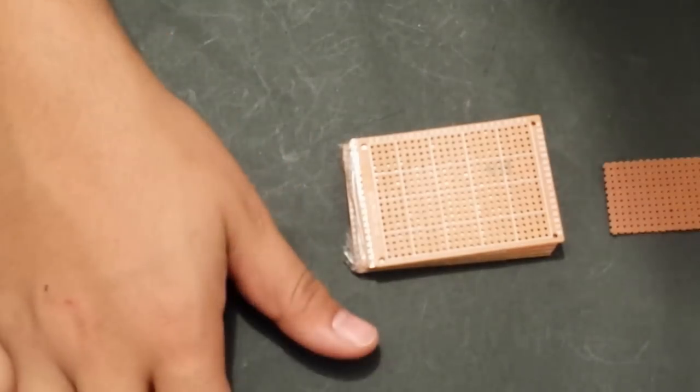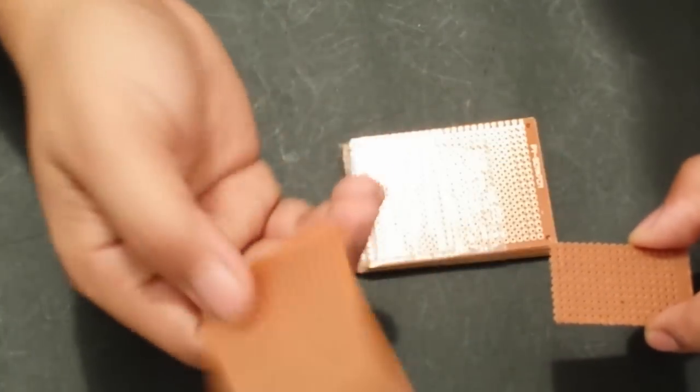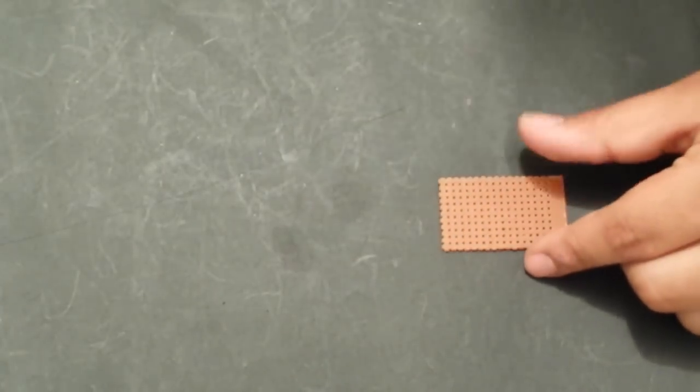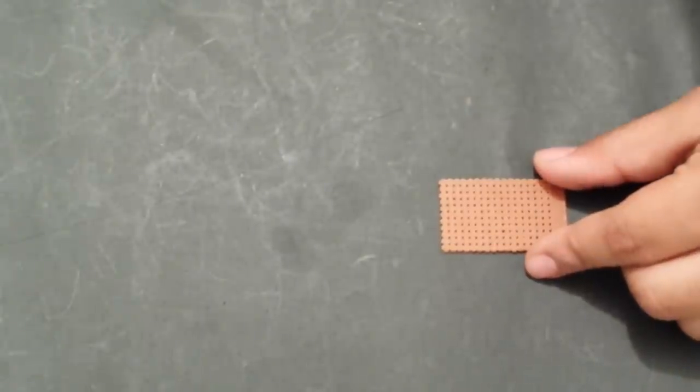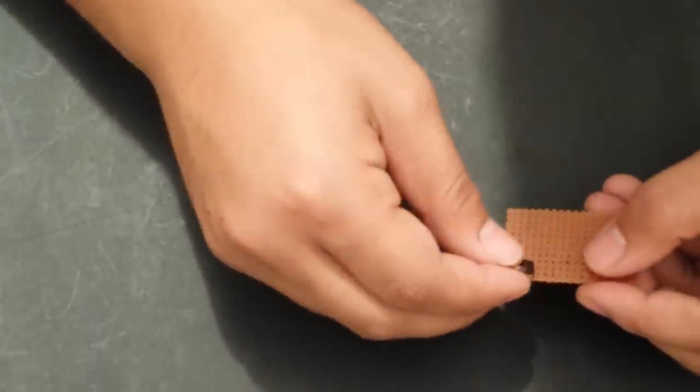All right guys, so let's first build our circuit. I'm using only this small piece of the PCB, will not be needing the whole thing, so I put this aside. I will start by soldering my D235 transistor in place and I will put it here.